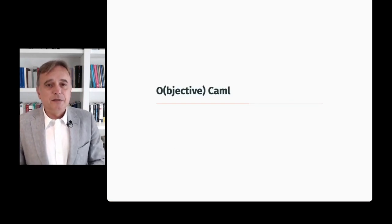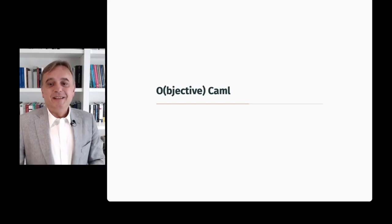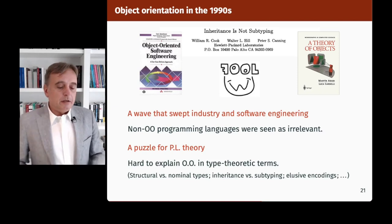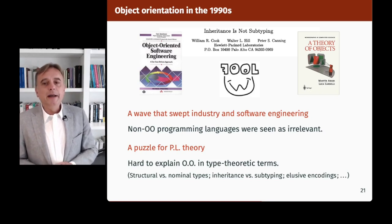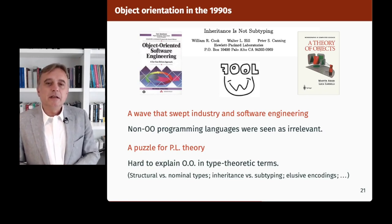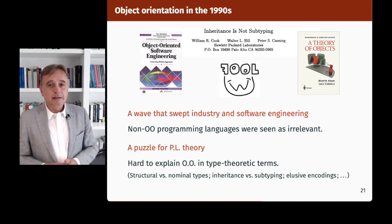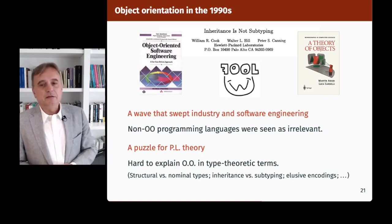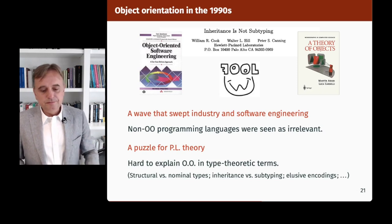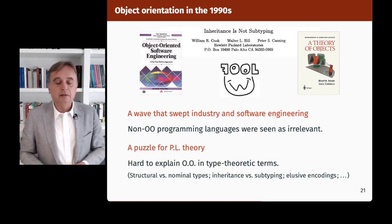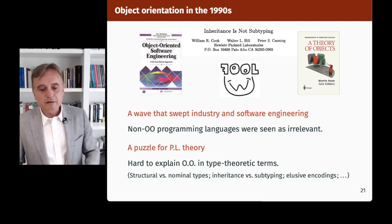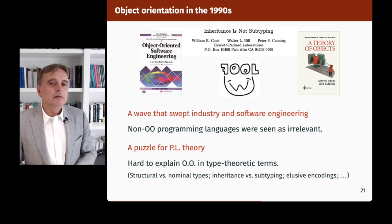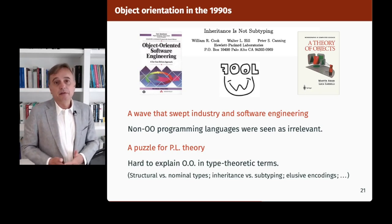This brings us to Objective Caml, which is essentially an extension of Caml Special Light with some object-oriented features. I have to explain why objects. The answer is that object orientation was really a hot topic in the 1990s — a wave that swept industry and software engineering. Many new programming methodologies were being developed on top of object and class decompositions. Industry had fallen in love with C++, and non-object-oriented programming languages were seen as basically irrelevant and things from the past.